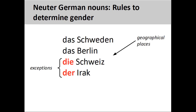Finally, the names of countries, cities, and continents, such as 'Schweden' (Sweden) and 'Berlin,' are neuter, although you need to be aware that exceptions to this rule also exist, such as 'die Schweiz' (Switzerland) and 'der Irak' (Iraq).